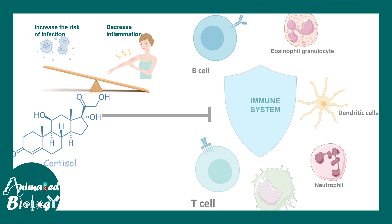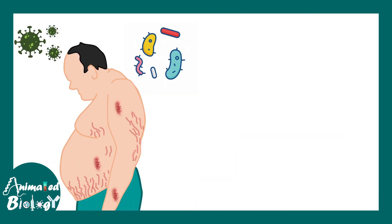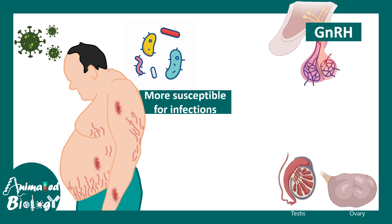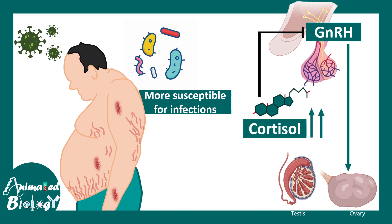The risk-benefit analysis of using cortisol as a therapeutic agent is therefore a daunting decision. Additionally, increasing cortisol downregulates GnRH — gonadotropin-releasing hormone — secreted from the hypothalamus. This downregulation leads to decreased sexual function of the testes and ovaries, resulting in decreased libido and fertility.